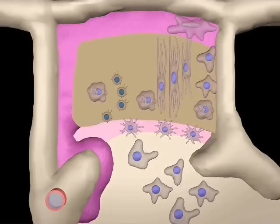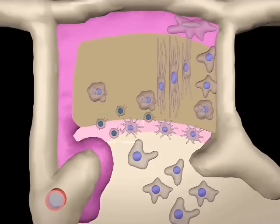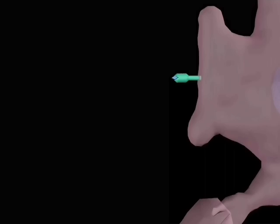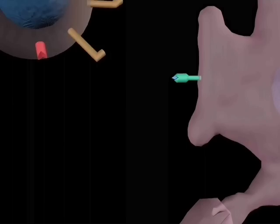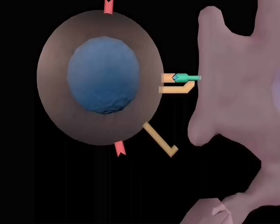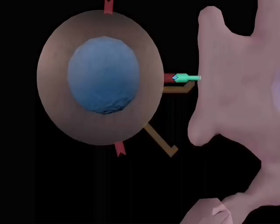Surviving cells continue towards the medulla. Interdigitating cells present them with antigens belonging to the body. Those which bind too strongly are destroyed. This is called negative selection.